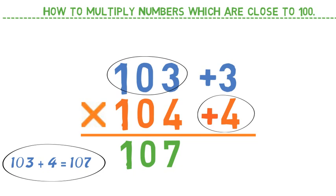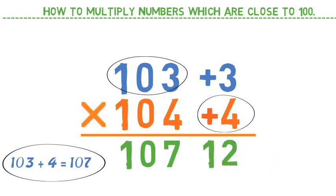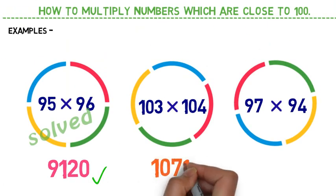Now the last step is the multiplication of the base difference. So 3 into 4 is 12. So the final answer is 10712.